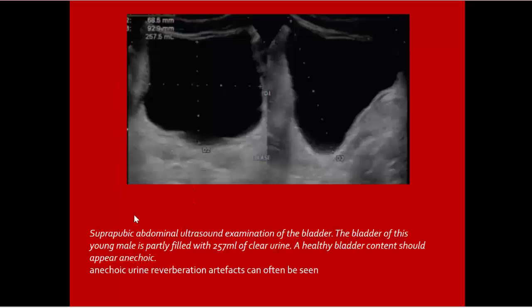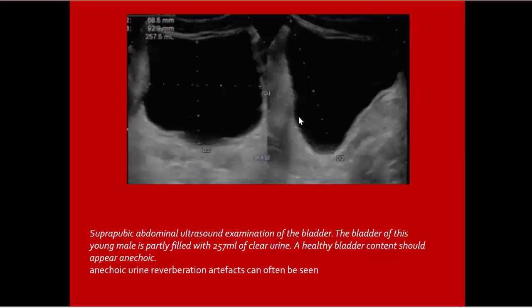Normal urinary bladder ultrasound. Suprapubic abdominal ultrasound of the bladder demonstrates the urinary bladder partly filled with clear urine. Urine normally must be clear with no abnormal echoes. Healthy bladder content should appear anechoic. Urine anechoic; reverberation artifact can be seen.